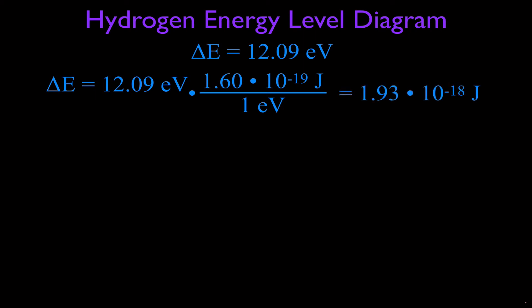We know one electron volt is 1.6 times 10 to the minus 19 joules, and that gives us that 12.09 electron volts, which is one unit of energy, corresponds to 1.93 times 10 to the minus 18 joules.